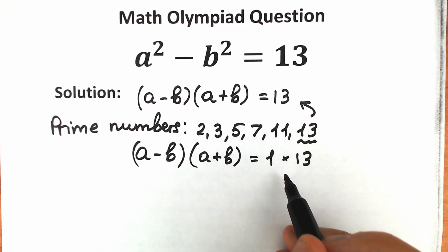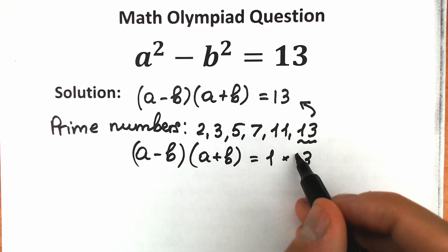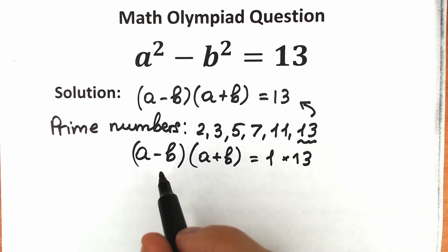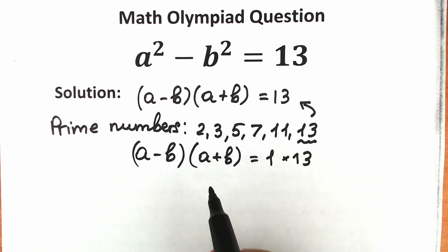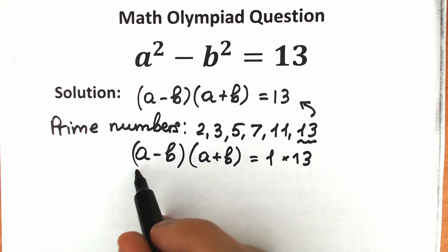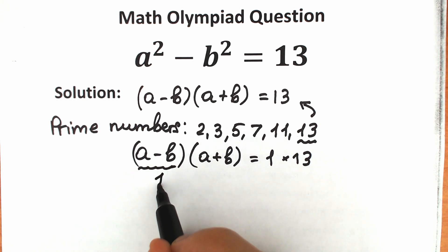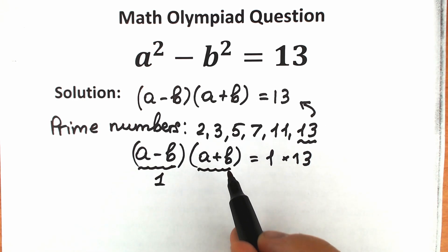If we look closely, on the right hand side we have a product of two values, and on the left hand side we have a product of two parentheses. So we can write our system of equations, because it's obvious that a minus b is less than a plus b. So it looks like a minus b is 1 and a plus b is 13.